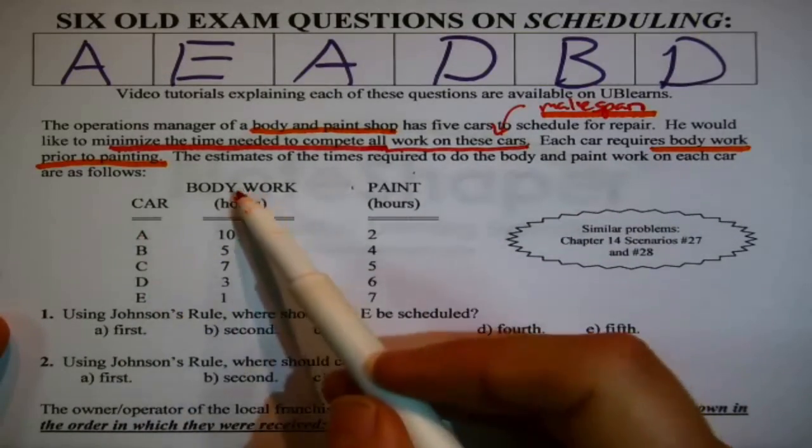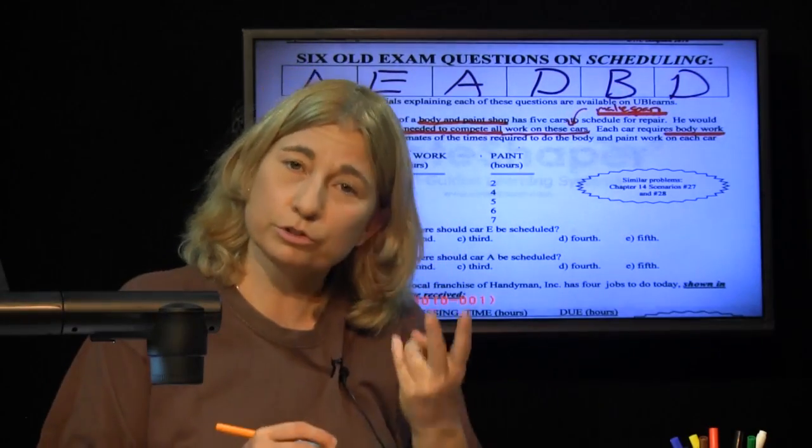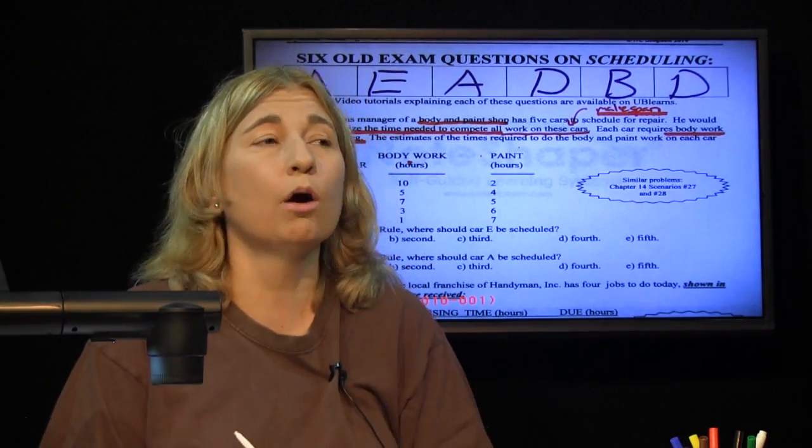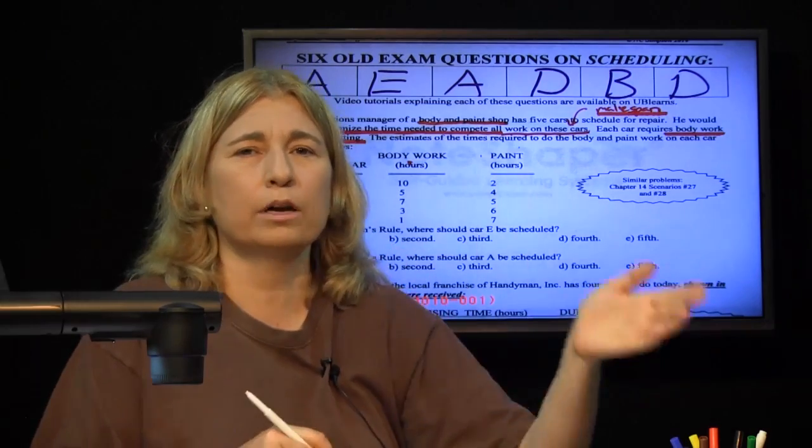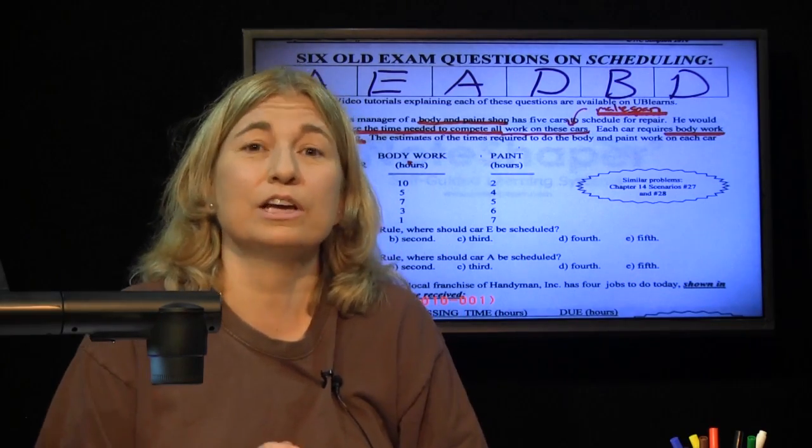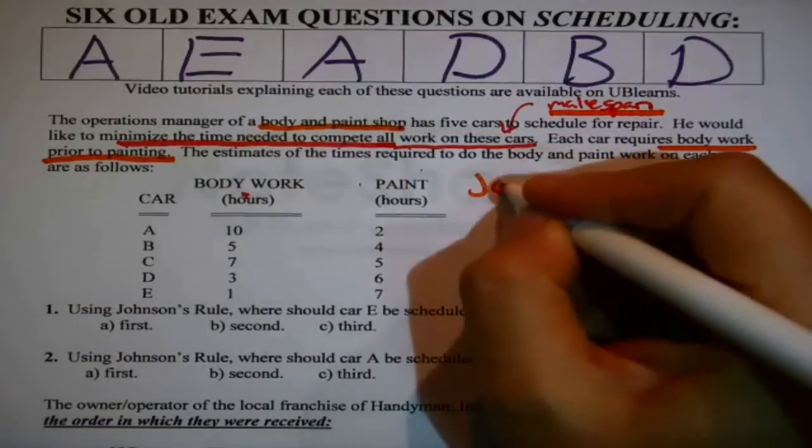Here are the cars, how much body work is needed, how much paint. This is the two-stage process. Having recognized this is a two-stage process, body work and then paint, we know automatically this is a Johnson's Rule problem.